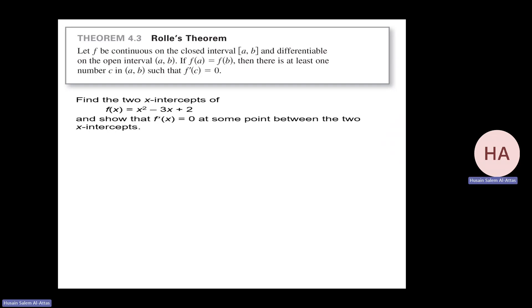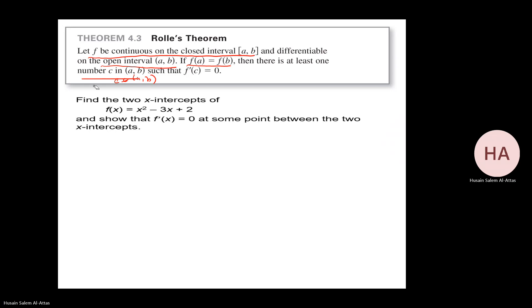Look at the conditions of Rolle's Theorem. If the function is continuous on the closed interval, differentiable on the open interval, and f(a) equals f(b), then there is at least one number c in the open interval (a, b) such that f prime of c equals 0.